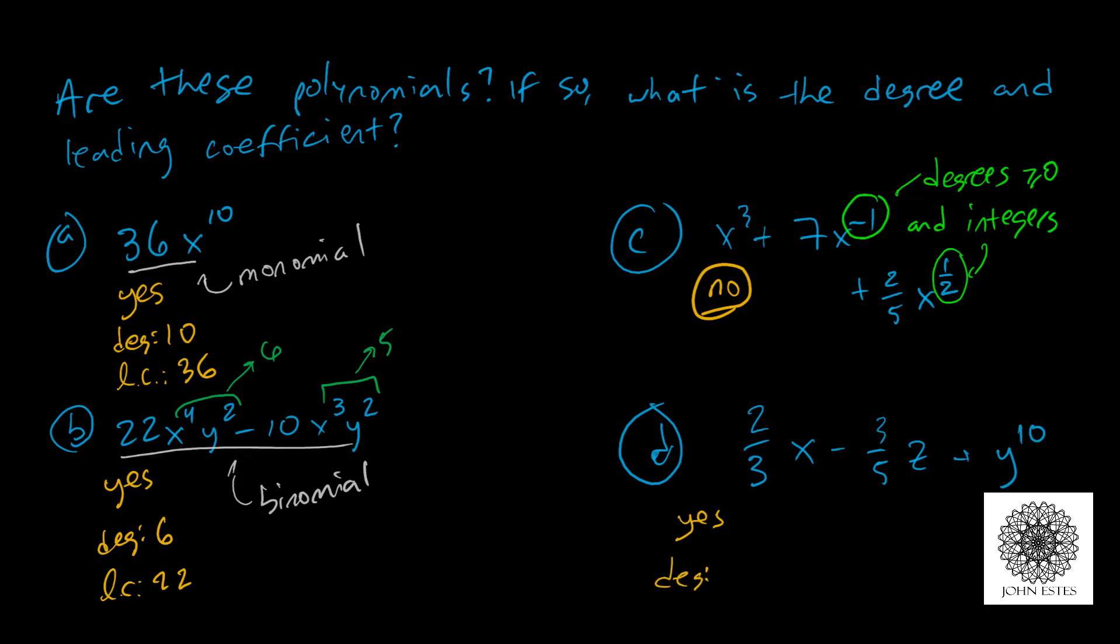If I look at the degree, my first term, 2 thirds x, is a degree 1. There's a 1 here that we don't see. Minus 3 fifths z has a 1, and y has 10. So it's a degree 10 polynomial. And the leading coefficient is not 2 thirds. Remember, your leading coefficient comes from the term of the highest exponent. So that would be a 1. Here you have a 1 times your y to the 10th. So that's the leading coefficient.